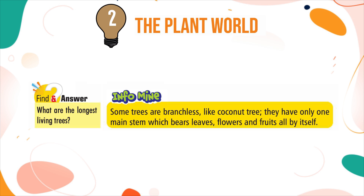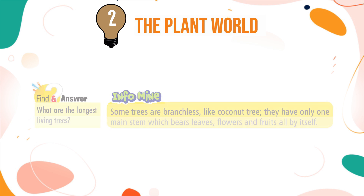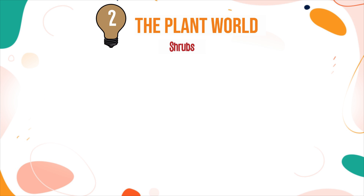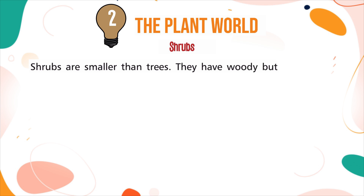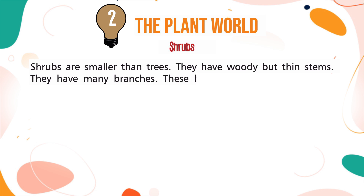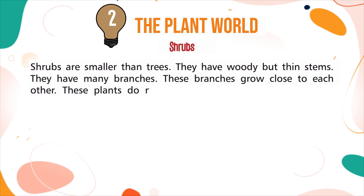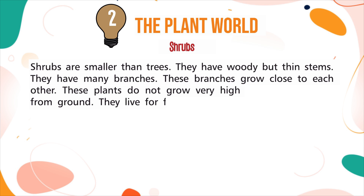Shrubs are smaller than trees. They have woody but thin stems and many branches. These branches grow close to each other. These plants do not grow very high from the ground. They live for a few years.